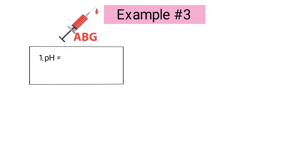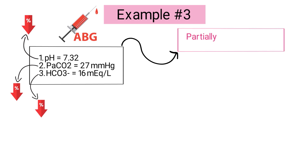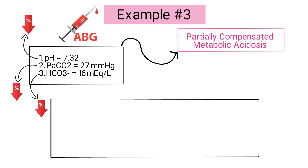In the third example, a patient has the following ABG results: pH of 7.32, PaCO2 of 27, and bicarb of 16. The pH is low and outside the normal range, while both the PaCO2 and bicarb are decreased. This ABG can be interpreted as partially compensated metabolic acidosis.